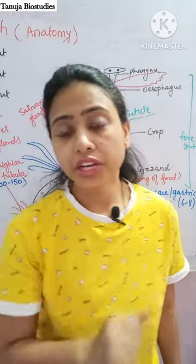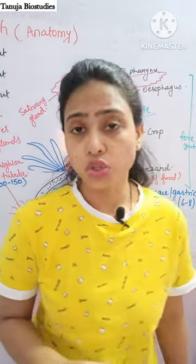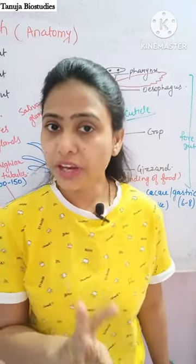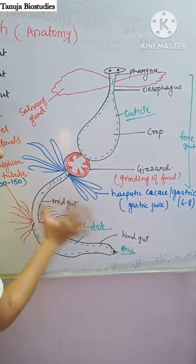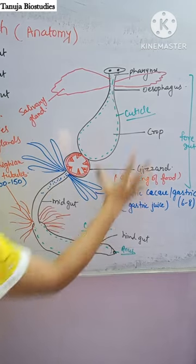Let's talk about the alimentary canal of cockroach. It is divided into three parts: foregut, midgut, and hindgut.